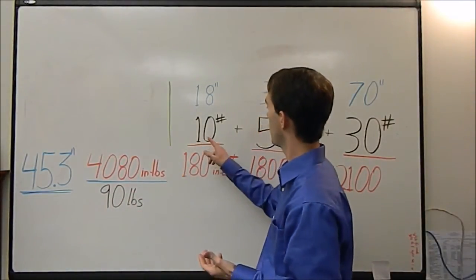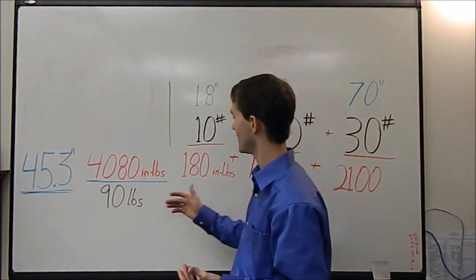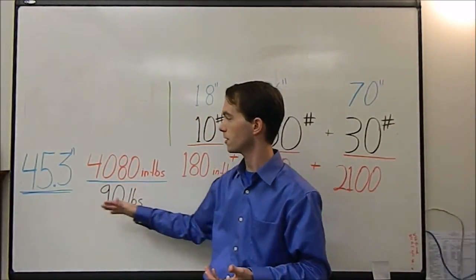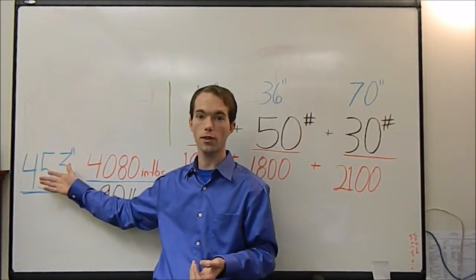So we take that and divide by the sum of the masses, or in this case the sum of our weights: 10, 50 and 30 to get 90. You divide all this out and you get 45.33333.